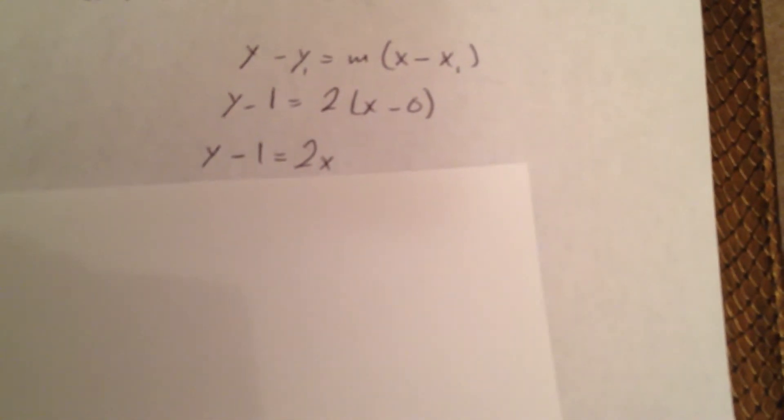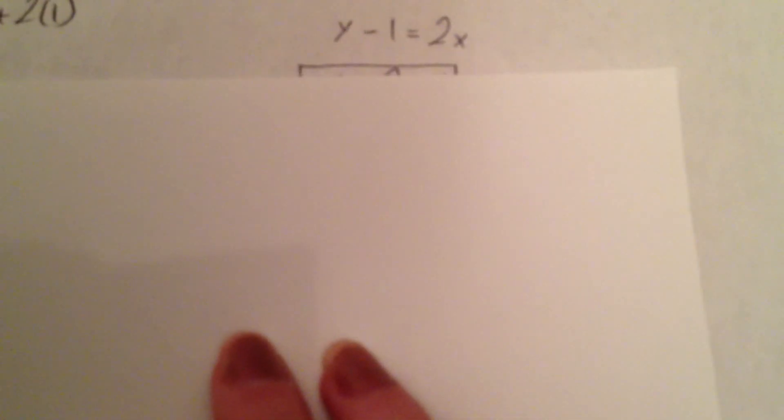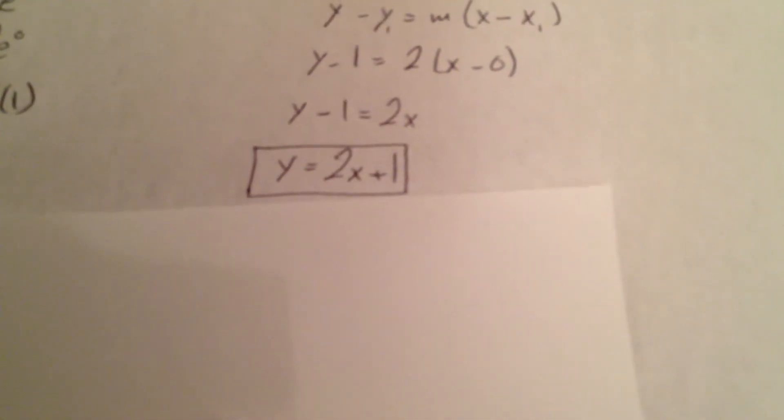So y minus 1 equals 2x. Therefore y equals 2x plus 1. This is the equation for the tangent line.